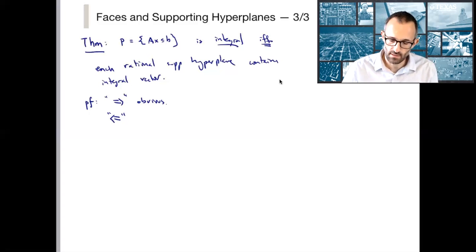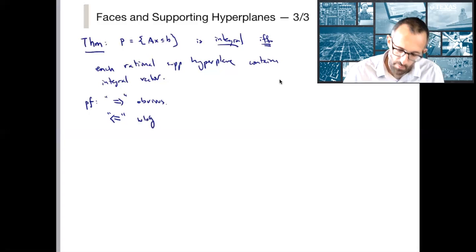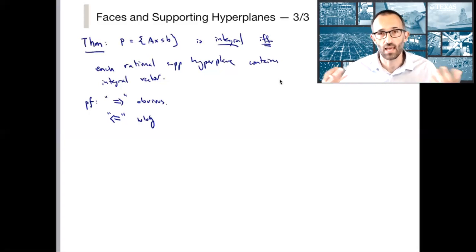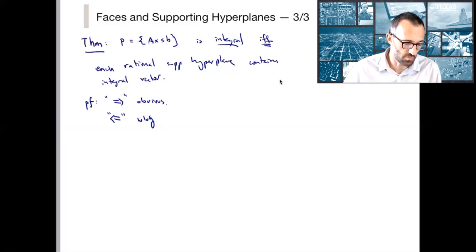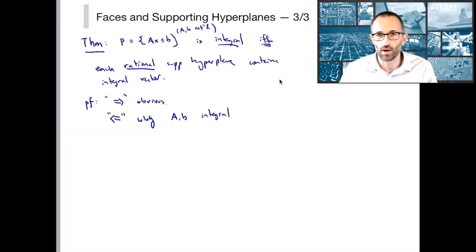So I'm looking at p is ax less than b, and I'm not going to assume it's integral. I'm going to assume that every rational supporting hyperplane contains an integral vector. Now, without loss of generality, the polytope ax less than b, since it contains rational data, I could just scale a and b without changing p, and therefore assume that a and b are integral. So we're already assuming that they are rational. Oh, I guess I didn't. Sorry, the hyperplane is rational. But in everything we're talking about, a and b are rational. So a and b rational. Otherwise there's no hope, and it's also not even interesting because we can't write it down with finite precision.